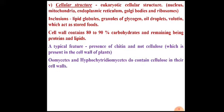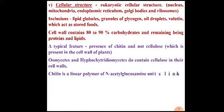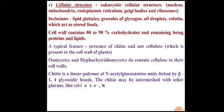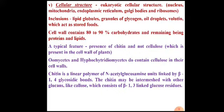Some classes of fungi such as oomycetes and hypochytidiomycetes do contain cellulose in their cell wall. Chitin is a linear polymer, similar to cellulose and starch, made up of monomers of N-acetylglucosamine linked by beta-1,4 glycosidic bonds. The chitin may be intermeshed or complexed with other glucans like callose, which consists of beta-1,3 linked glucose residues.